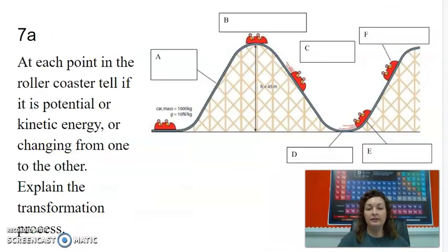So the next one, you're going to see the rollercoaster. It says at each point in the rollercoaster, tell if it is potential or kinetic energy or changing from one to another, and explain the transformation process. So transformation process is just how it's switching from one energy to the next.